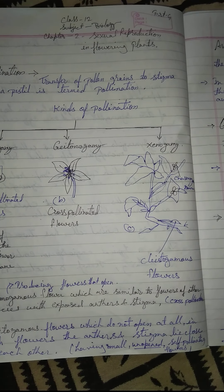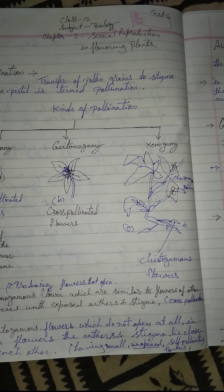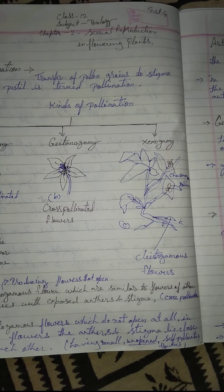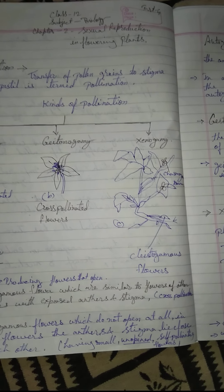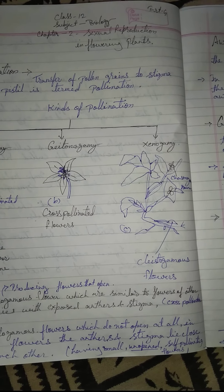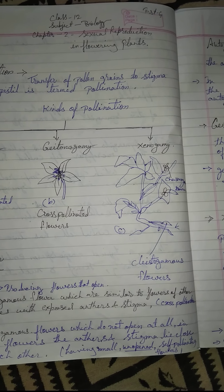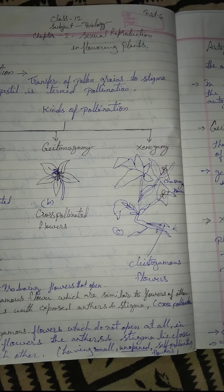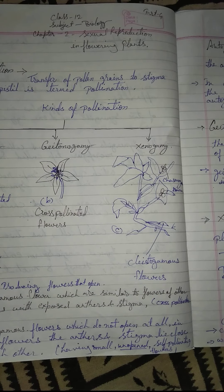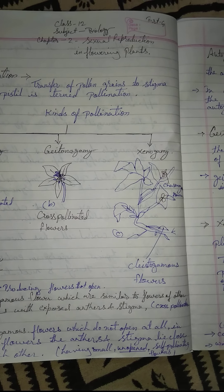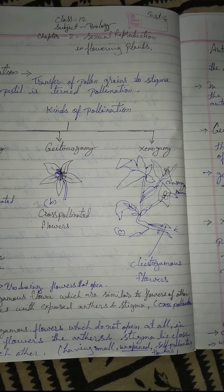The third type is xenogamy — the transfer of pollen grains from the anther to the stigma of a different plant. This is the only type of pollination which brings genetically different types of pollen grains to the stigma.